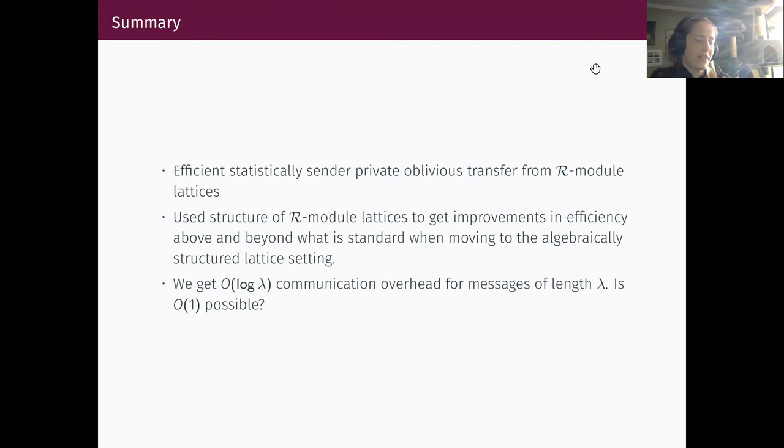So to summarize, we present an efficient statistically sender private oblivious transfer protocol from module lattices. We use the structure of these lattices to get improvements of efficiency that sort of exceed what you would immediately expect from moving to these more structured lattices. And we still do get this communication overhead. We get a log lambda, lambda is your security parameter, communication overhead for communication between the sender and the receiver compared to the actual bits of information that are being exchanged. So a sort of open question is, is there any way we can drive this down? Is there any way to actually get constant overhead? That would be a really appealing next goal. So thank you very much again for sticking around, and I hope to see you at the conference.